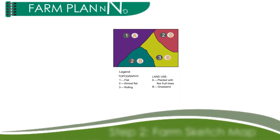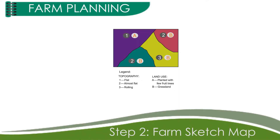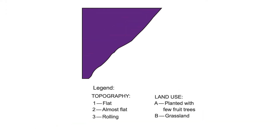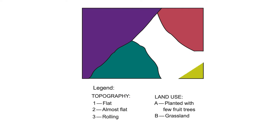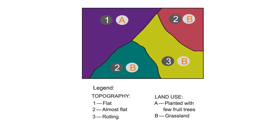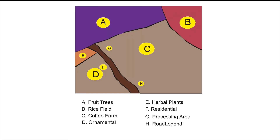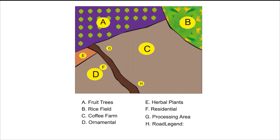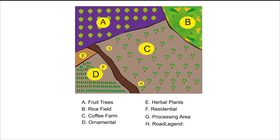Step 2: Farm sketch map. Make an area map that shows the topography, slope, and elevation. Visualize how the farmland will look after 5 years.